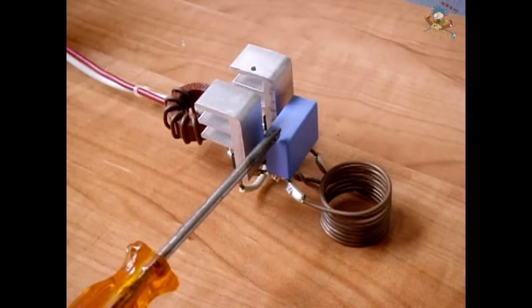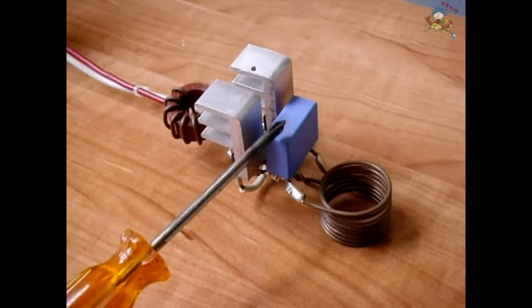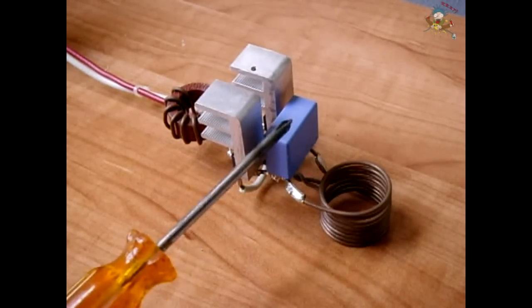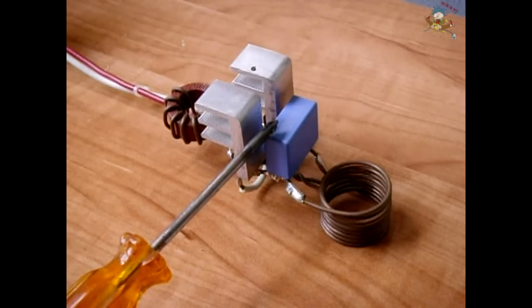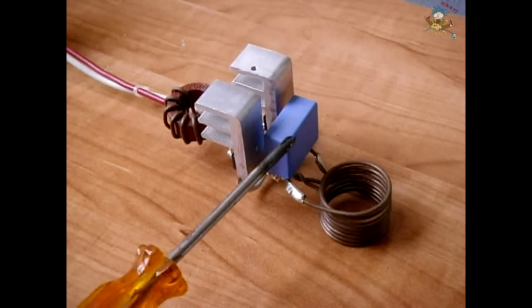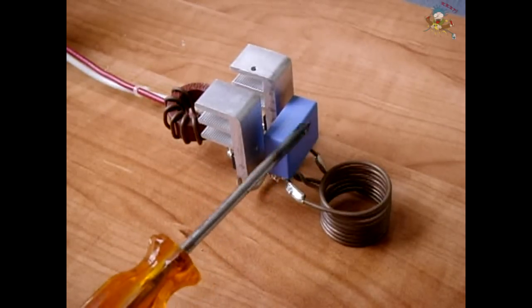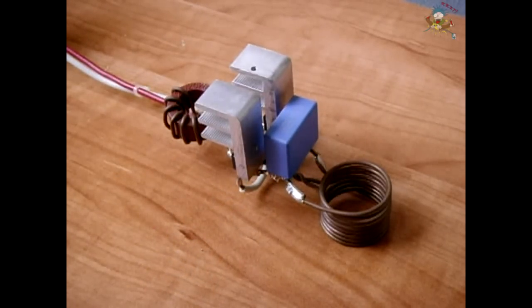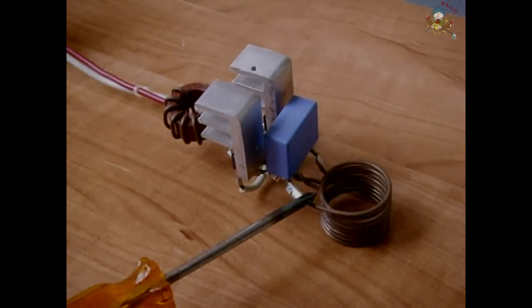So instead of using just a 0.47 microfarad, you might want to use maybe 0.15 microfarads each. Three of them in parallel will be around 0.45. So you could spread the current out among all three of them. By doing that it can handle the load better and this one will not get so hot because you have two others to help dissipate the heat. Now the next thing I want to do is remove this working coil and experiment with a different type of a working coil.